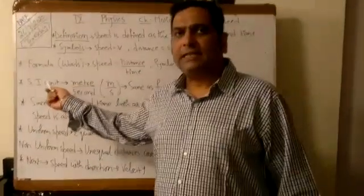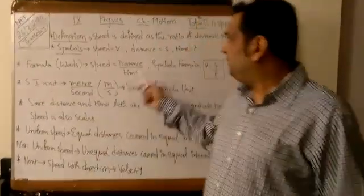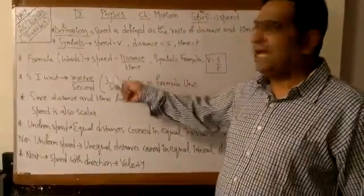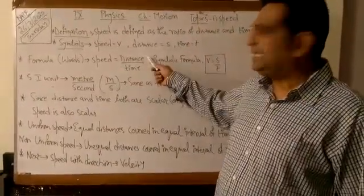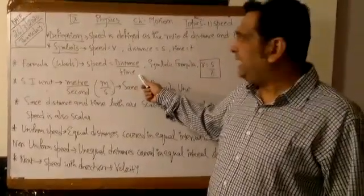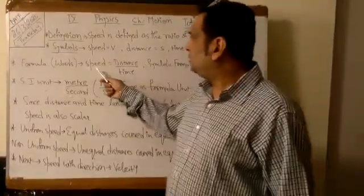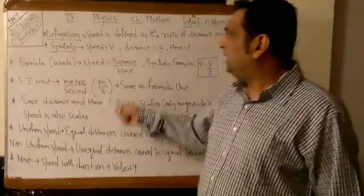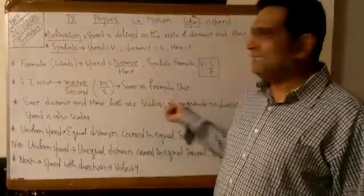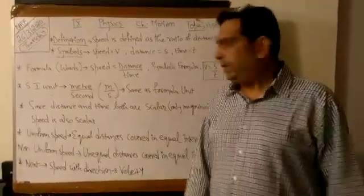SI unit — the SI unit of speed is meter per second. The SI unit of distance is meter and the SI unit of time is second, so the SI unit of speed is meter per second, which is the same as the formula unit.